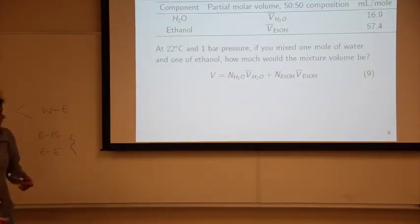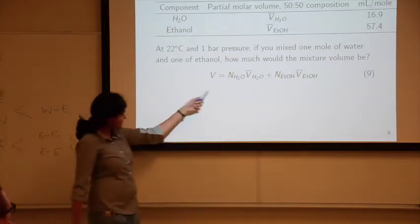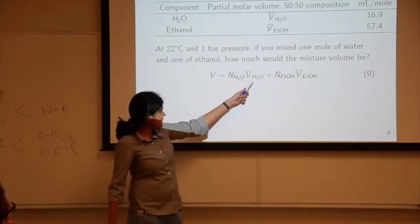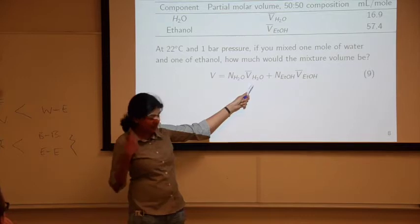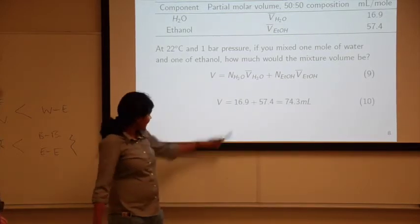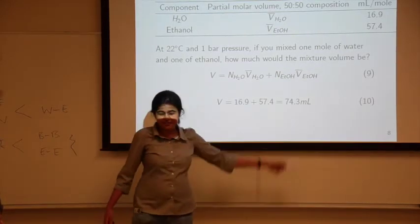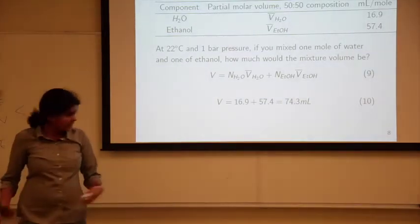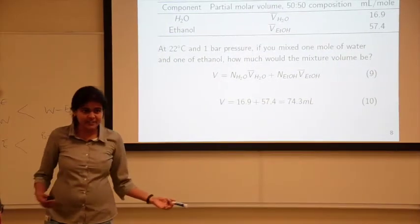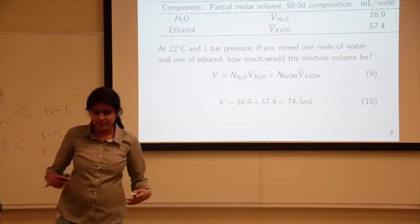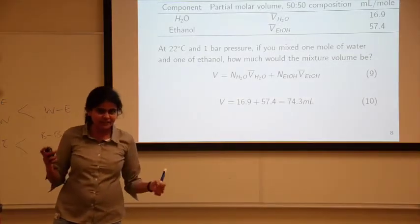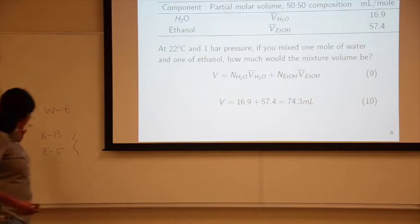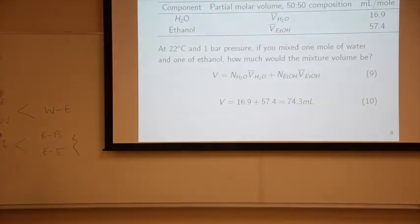This is the right way to do it. We're using 16.9 and 57.4 instead of 18 and 58. We revisit this expression, replacing pure substance properties with partial molar properties. We're getting an answer that's slightly more realistic. The old answer was 76 mL. The new answer is 74.3, which is 1.7 mL lower. This is the shrinkage from strong water-ethanol intermolecular binding.